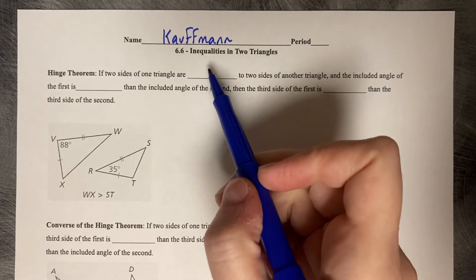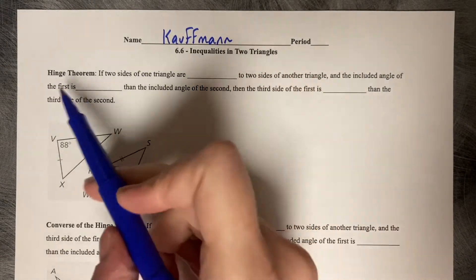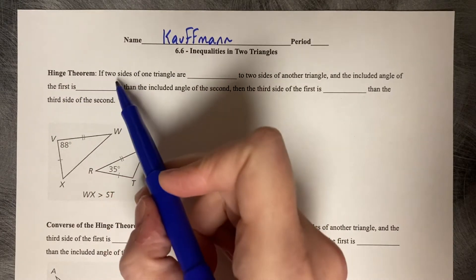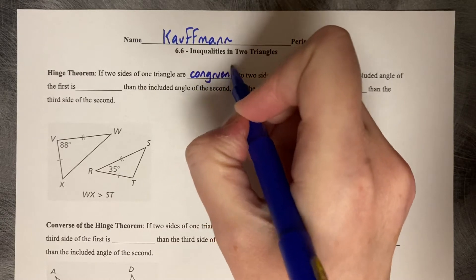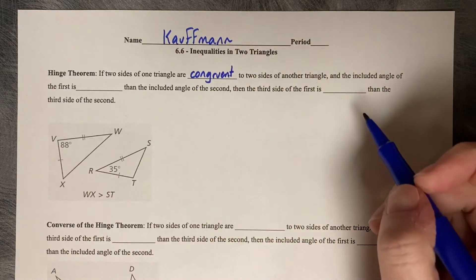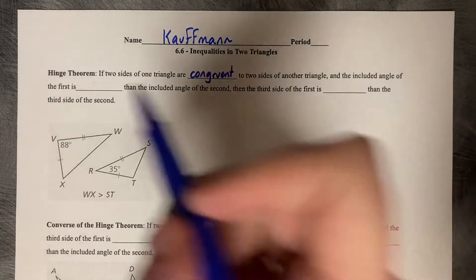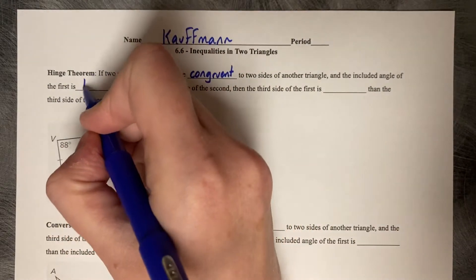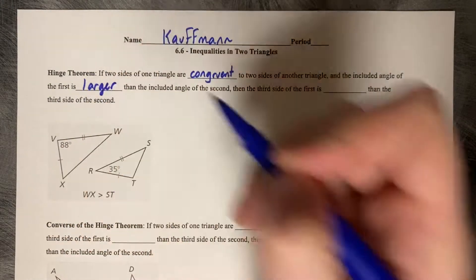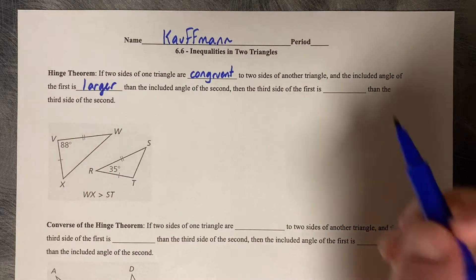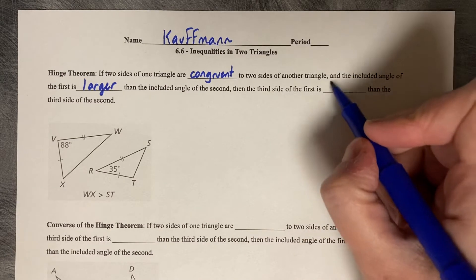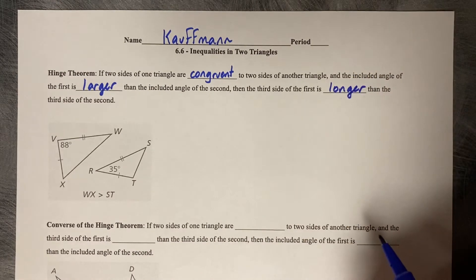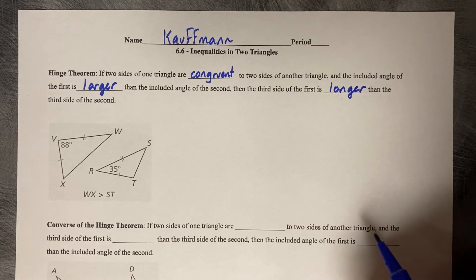6.6 Inequalities in Two Triangles. The Hinge Theorem states: if two sides of one triangle are congruent to two sides of another triangle, and the included angle of the first is larger than the included angle of the second, then the third side of the first is longer than the third side of the second. This is similar to inequalities in triangles where you're comparing the size of one side length compared to another.